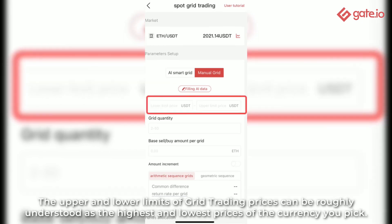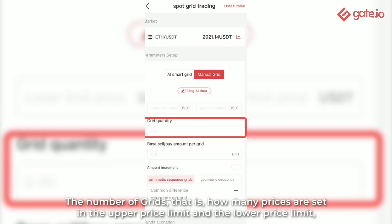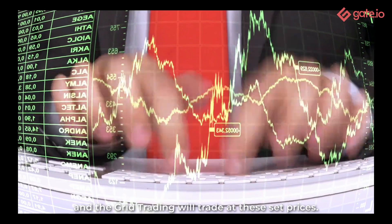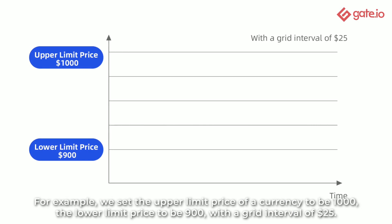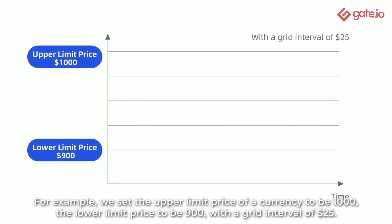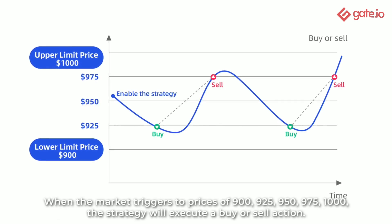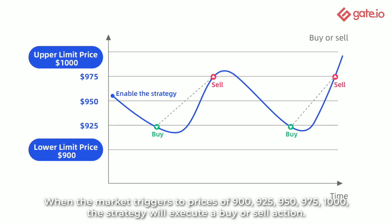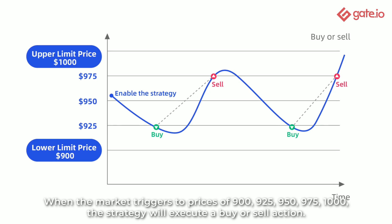The upper and lower limits of grid trading prices can be roughly understood as the highest and lowest prices of the currency you pick. The number of grids is how many price levels are set between the upper and lower price limits, and the grid trading will trade at these set prices. For example, we set the upper limit price to 1000 and the lower limit price to 900, with a grid interval of 25 USD. When the market triggers prices of 900, 925, 950, 975, or 1000, the strategy will execute a buy or sell action.